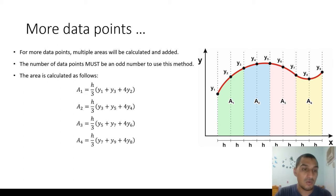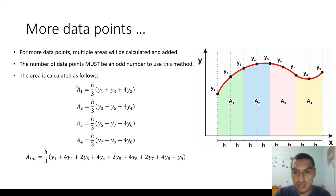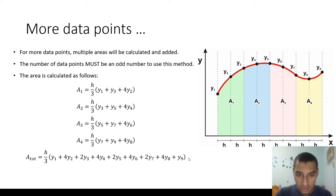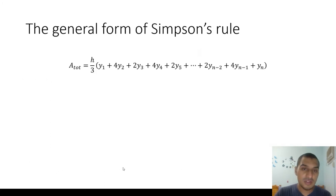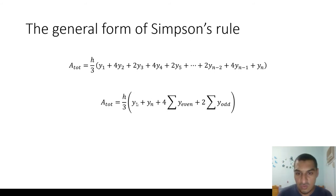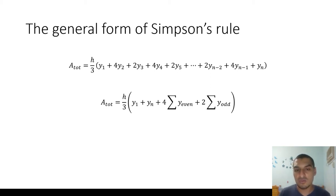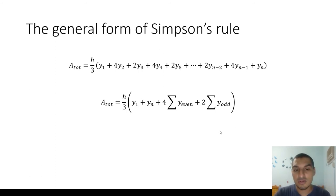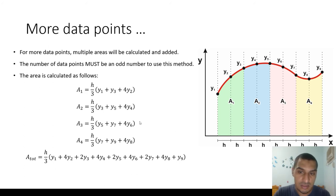Applying the equation to each pair of intervals: A1 is a function of y1, y2, y3; A2 is a function of y3, y4, y5; and so on. Adding all areas together gives a general formula: h/3 multiplied by y1 plus yn, plus 4 times the sum of even-indexed y's, plus 2 times the sum of the odd-indexed y's (excluding the endpoints). However, when using Microsoft Excel, we apply the sub-interval equation directly rather than this general form.